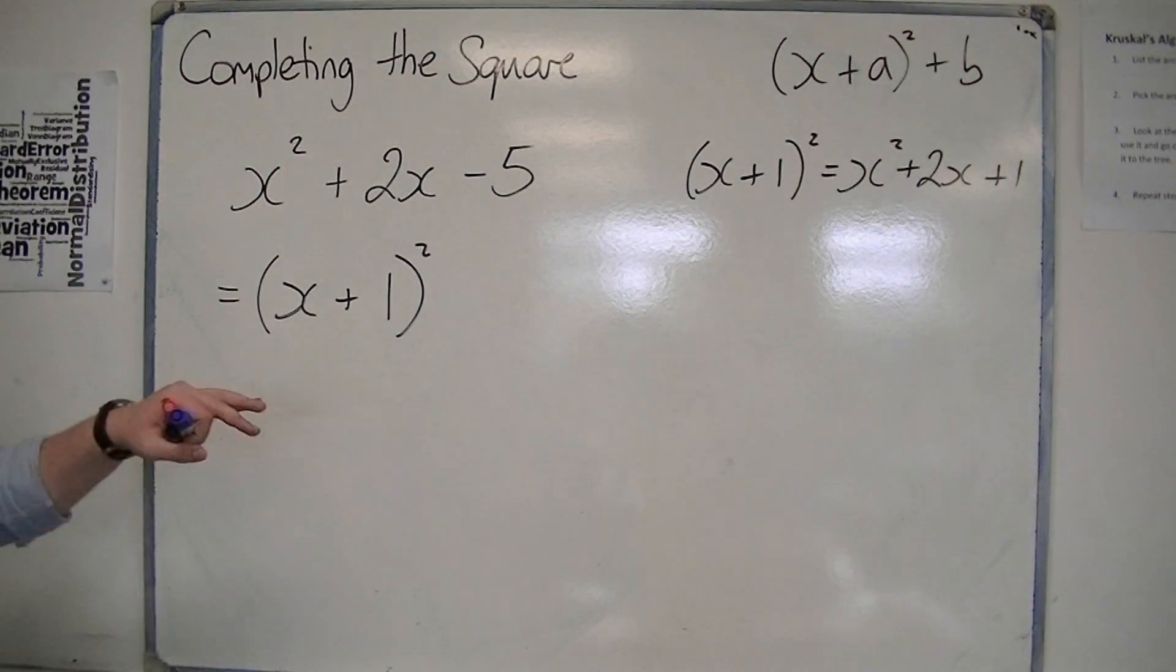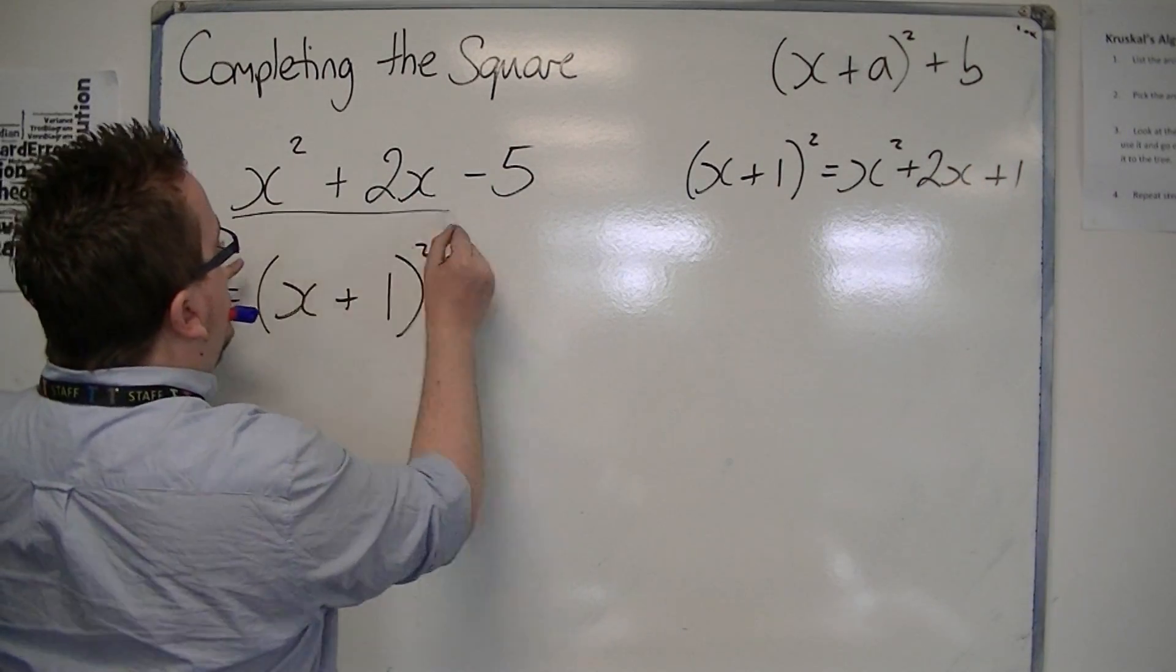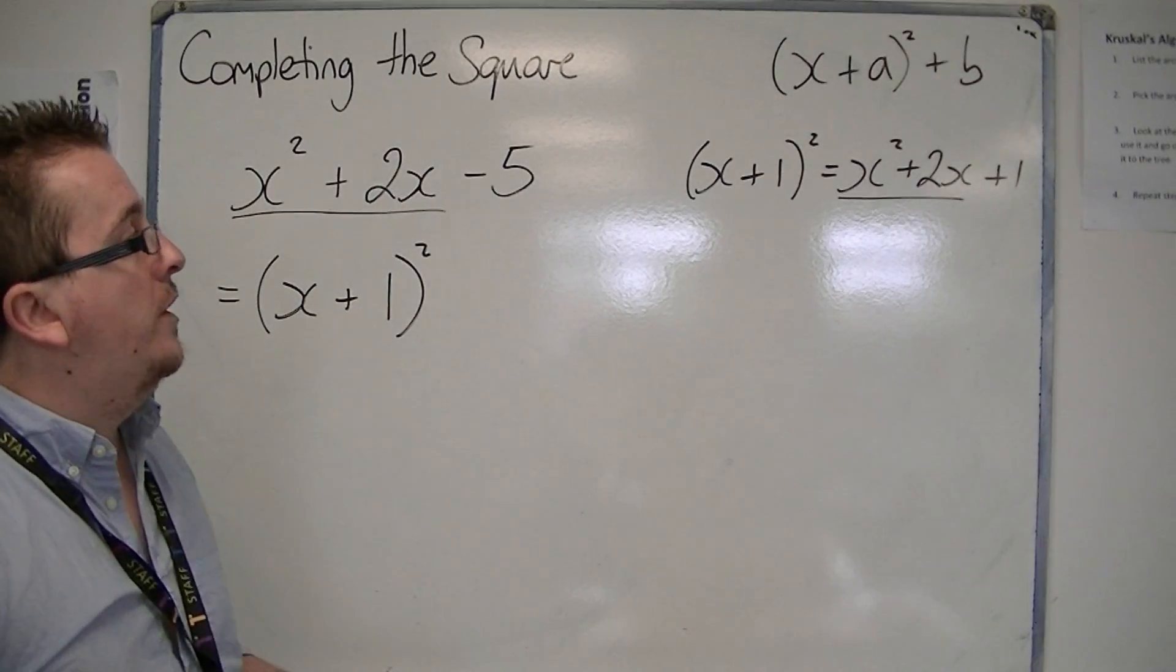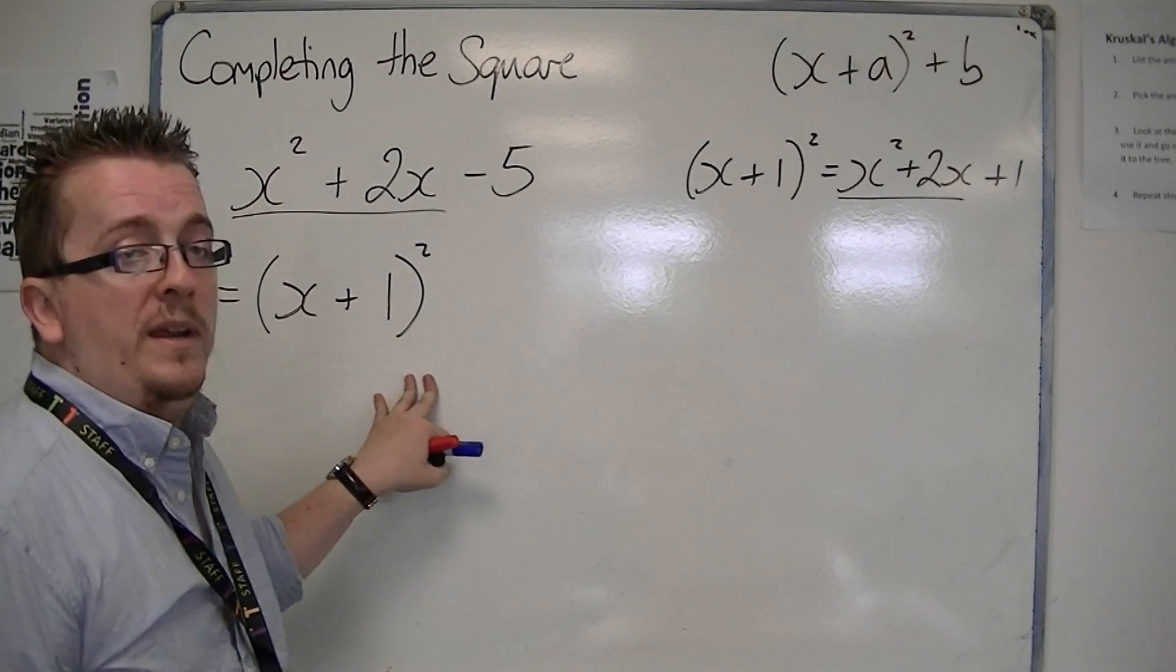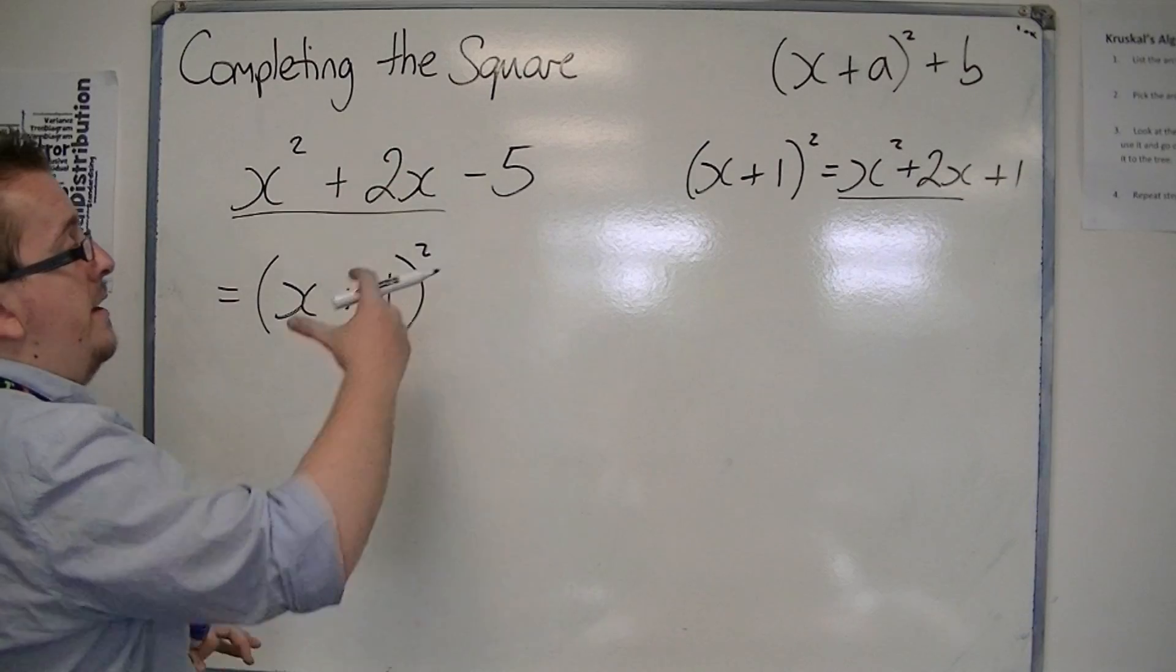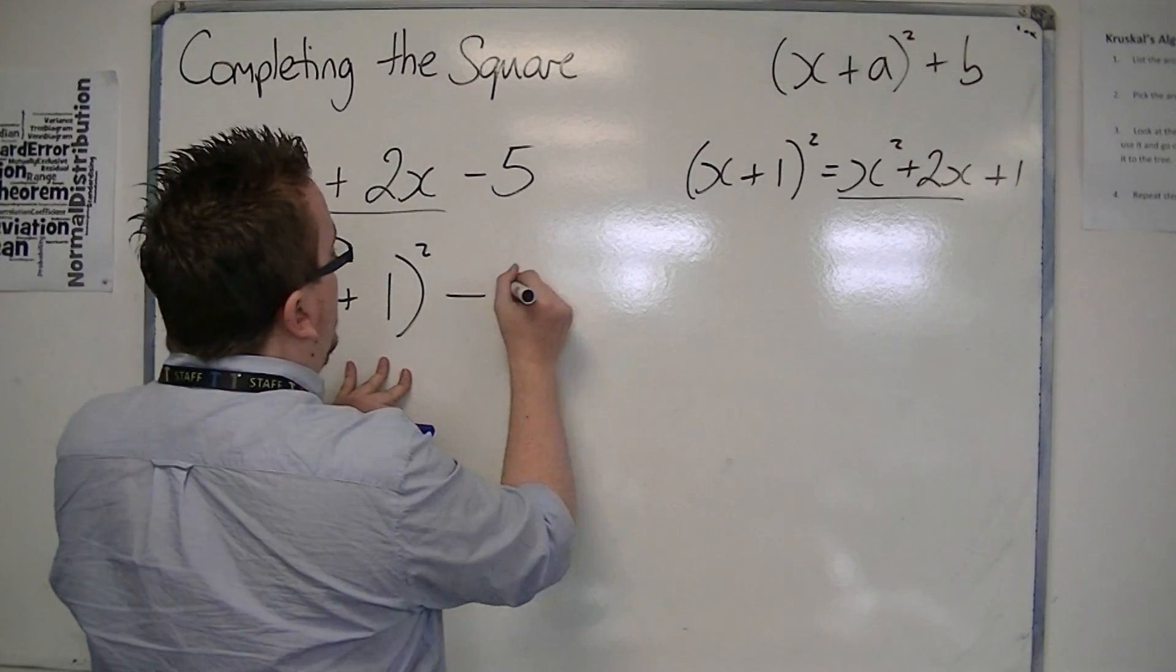So what you find is that we've nailed down the x² + 2x bit, but what we haven't quite got yet is that -5. Instead, what we have at the moment is just +1. So in order to get from +1 to -5, I would have to take away 6.